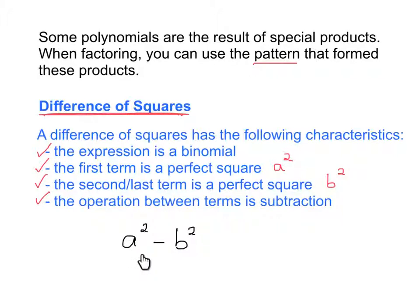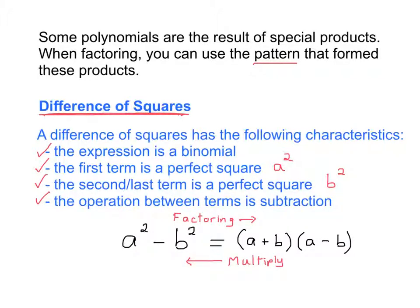The general form of a difference of squares polynomial is a squared minus b squared. When we see that pattern, we can write our factored answer as the square root of the first term plus the square root of the second term as one factor, and the square root of the first term minus the square root of the second term as the other factor. This is a good point to remind you that factoring and multiplying are opposite operations — going from a polynomial to factored form is factoring, but going from the factors back to the polynomial is multiplying.